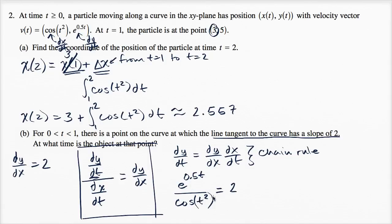For the calculator, we need to set this up so some expression equals zero. Let me rearrange this equation. I could multiply both sides by cos(t²), so I'll have e^(0.5t) = 2cos(t²). Then subtract from both sides to get e^(0.5t) - 2cos(t²) = 0.